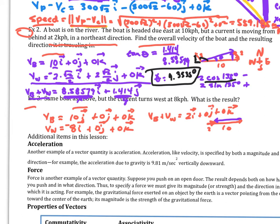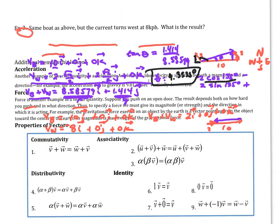Additional vector quantities in this section include acceleration — which has both magnitude and direction — and force, which is another common vector quantity. The properties of vectors include: commutative property of addition, associative property with addition and scalar multiplication, and the distributive property. There are also identities: multiplying a vector by one gives the same vector, there's a zero vector identity for addition, and multiplying by negative one gives the additive inverse (subtraction).